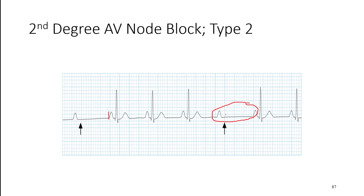Any time you see two P waves — shorter duration, not super tall compared to T waves — before a single, narrow, normal-looking QRS complex, your mind should go to a second-degree AV node block. Then we look and see: is there a prolongation in the PR interval?